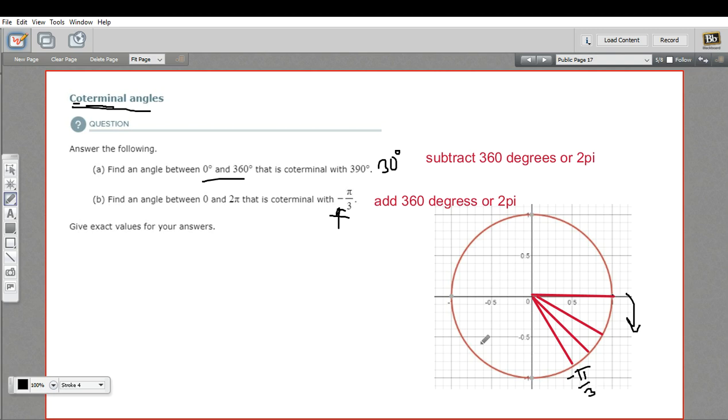So what's an angle that's coterminal with that? Let me get rid of these other lines I sketched in here so it's a little clearer. Well, an angle that's coterminal with that would be a positive angle that's going this way around the circle.